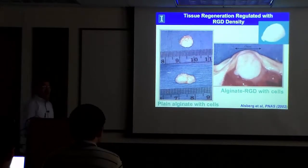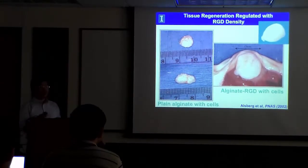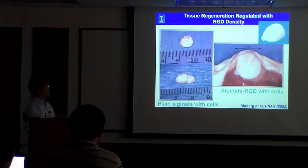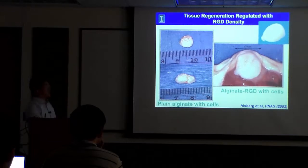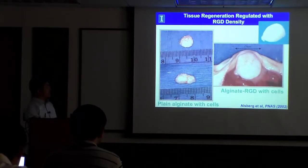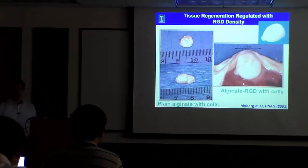We further examined whether the cell adhesion peptide can improve tissue formation. Chondrocytes were encapsulated and implanted on the back of a mouse. After a month, the hydrogel without any cell adhesion peptide formed only very fibrous soft tissue. In contrast, the adhesion peptide conjugated to the gel really helped the cells form a very hard and opaque cartilage-like tissue, very similar to original cartilage tissue.